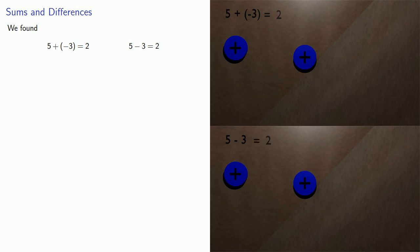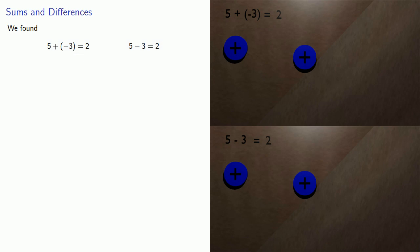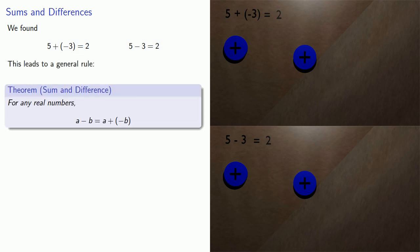If you look, we have the same numbers in both cases, except we're doing something slightly different. And this leads to a general rule: for any real numbers, a minus b is the same as a plus the additive inverse of b.